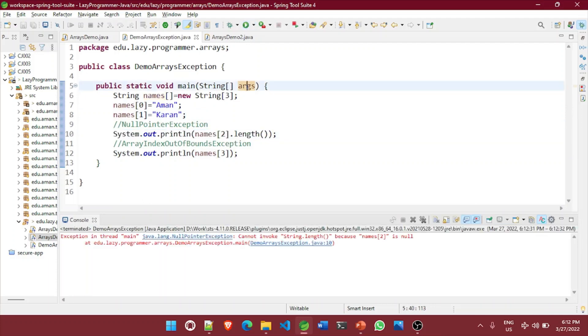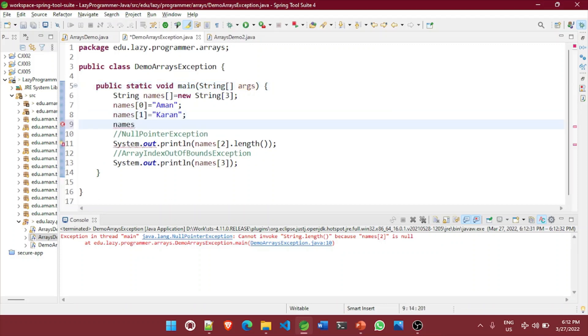And here you can see null pointer exception is there. It is also giving me a clear message cannot invoke string dot length because name to is null because we have not assigned any value to it. Now let's try to assign a value to it.